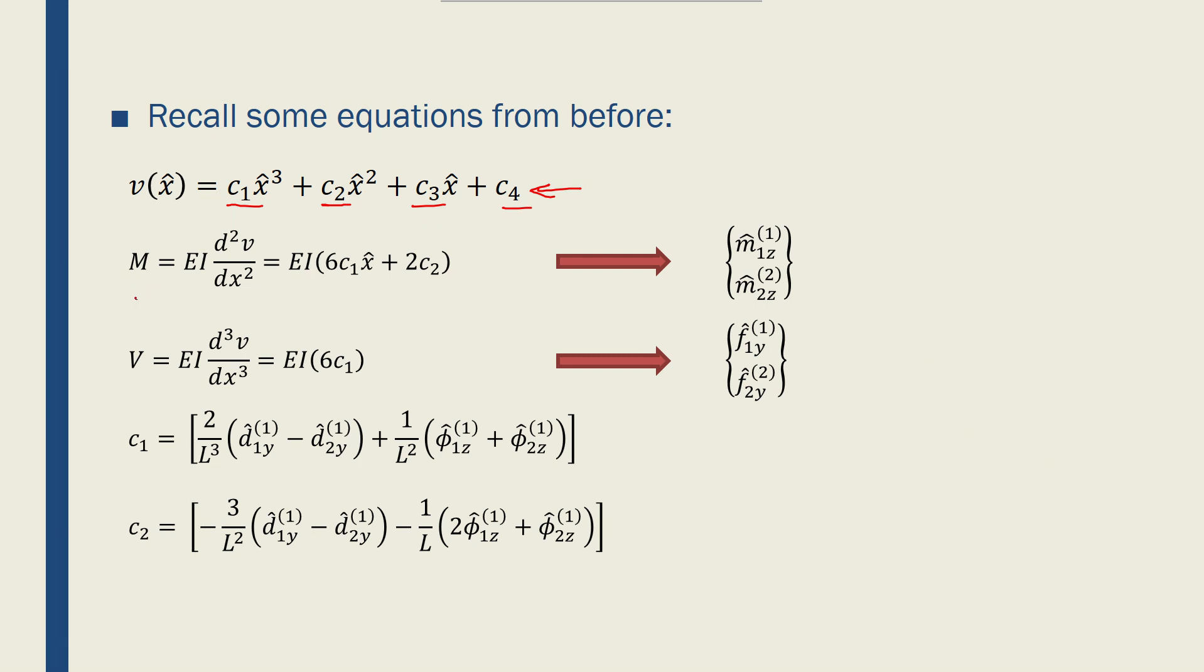And we also had these equations. M is equal to EI times the second derivative of v, displacement function, with respect to x, which is equal to EI times 6c1x plus 2c2.